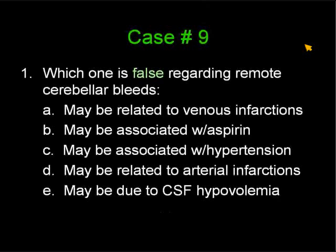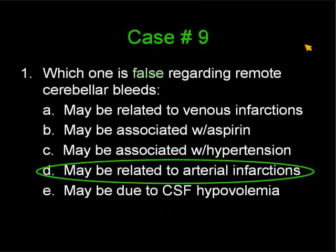The second question: which one is false regarding remote cerebellar bleeds? A, they may be related to venous infarctions; B, they may be associated with aspirin; C, they may be associated with hypertension; D, they may be related to arterial infarctions; E, they may be associated with CSF hypovolemia. The answer is D, arterial infarction. All of the other findings can lead to remote cerebellar bleeds.